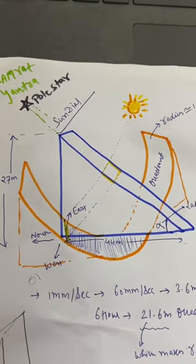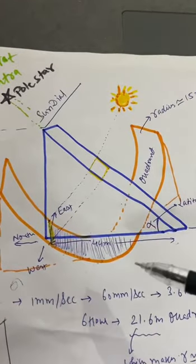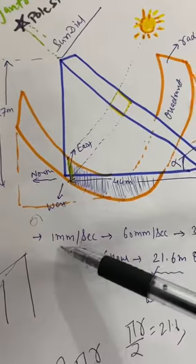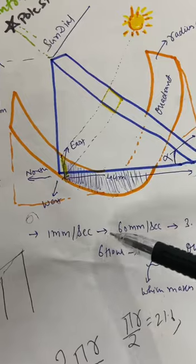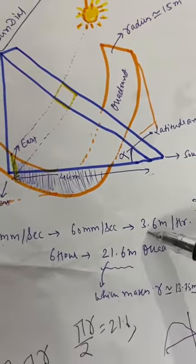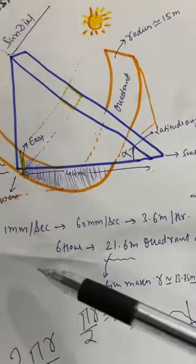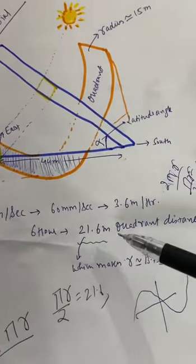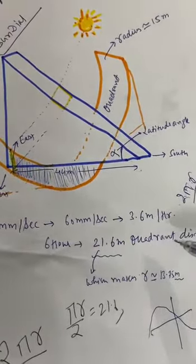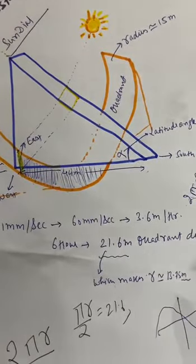Another fact is that it is said that the shadow rises or falls with a speed of one millimeter per second. If translated into an hour, it's going to be 3.6 meters per hour. For 6 hours, it's going to take 21.6 meters quadrant distance, which will make around radius 13.75 meters.